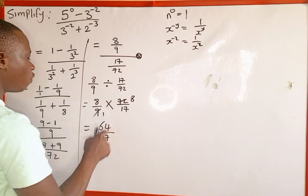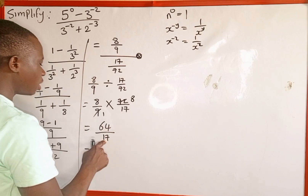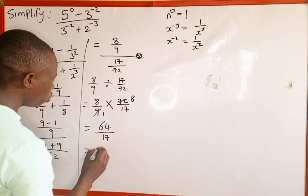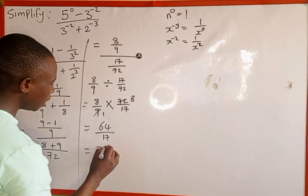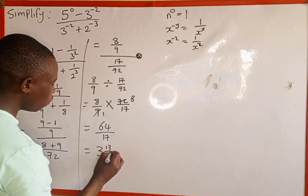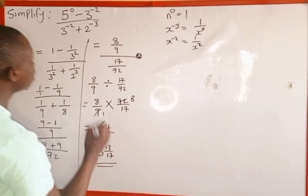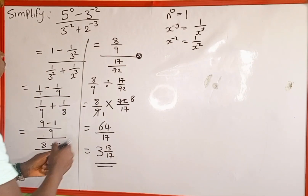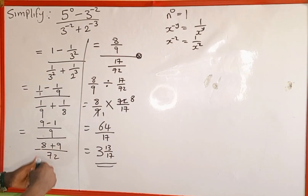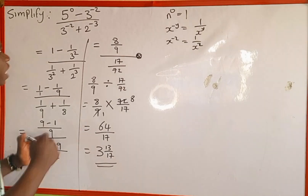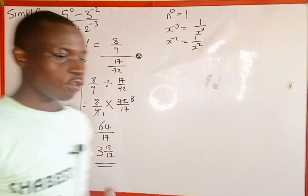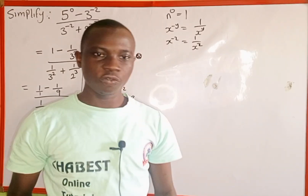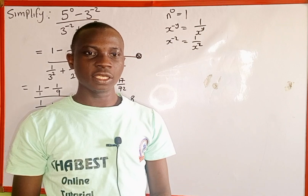When you divide 64 by 17, it gives us 3 whole number 13 over 17. So this is the simplification of this expression with negative exponents and zero. Thank you for watching, and please follow and subscribe for more videos like this.